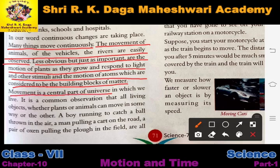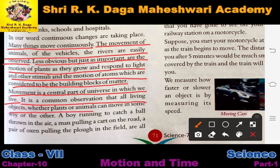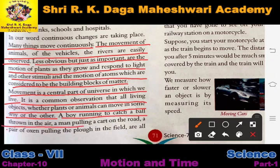Movement is a central part of the universe in which we live. Every thing — or at least most things — remain in motion. It is a common observation that all living objects whether plant or animal can move in some way or other. A boy running to catch a ball thrown in the air, a man pulling a cart on the road, a pair of oxen plowing a field — all are examples of motion in animals.